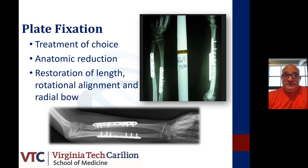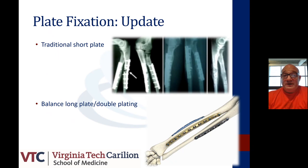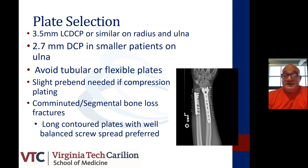Plate fixation is the treatment of choice. It affords you the ability to provide anatomic reduction, restoration of length, rotational alignment, and the radial bow. Plate fixation has evolved from the traditional short, bulky plates to using balanced long plates and double plating techniques. Plate selection varies from 3.5 millimeter LCDCP plates to a 2.7 millimeter DC plate in smaller patients. You want to avoid tubular or flexible plates.